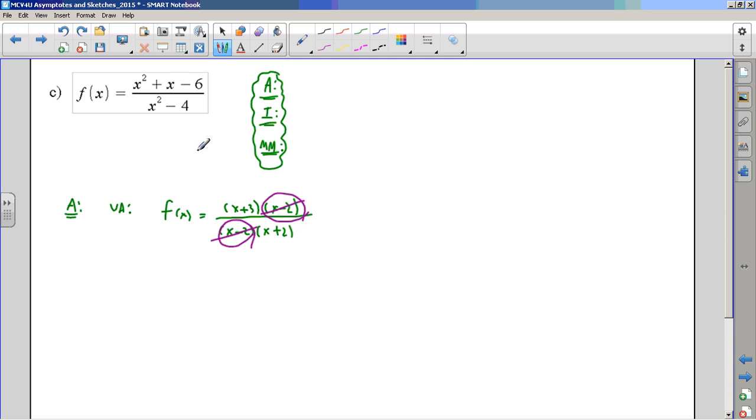So that means this expression is actually the same as (x + 3)/(x + 2), as long as x isn't equal to 2. Does that mean x equals 2 is a vertical asymptote? No.